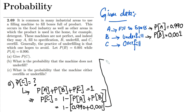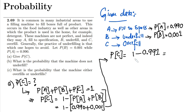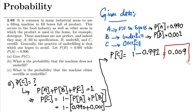So probability of c would be 1 minus 0.991, which gives us 0.009. So that is the answer of part a.